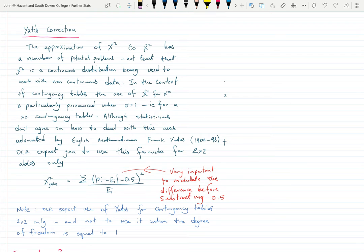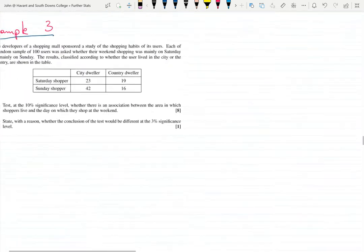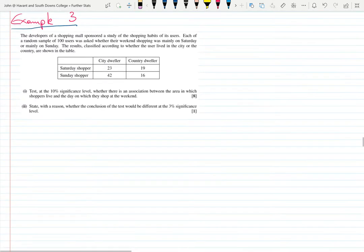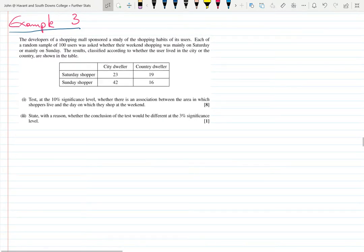If you're studying A-level, check your board. I know that AQA and OCR use Yates; I have a feeling that Edexcel don't. Not all boards agree, not all statisticians agree, but OCR definitely expect us to use Yates if you've got a two by two contingency table. Okay, so here we have an example and we've got to write our hypothesis.